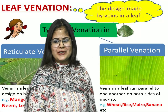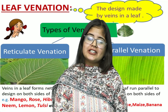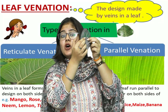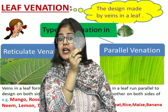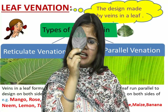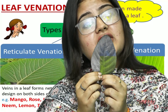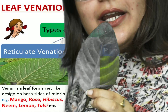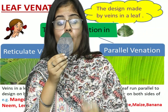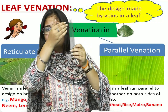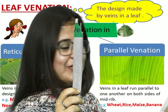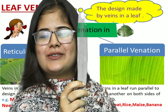What is the difference between reticulate and parallel venation? When the veins are arranged in a net-like structure, it is known as reticulate venation. When the veins run parallel to each other along the leaf, this type of venation is known as parallel venation.